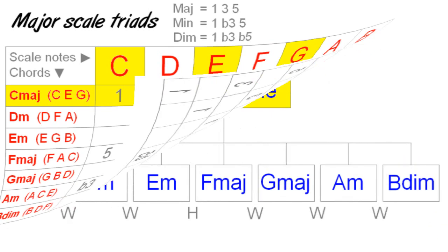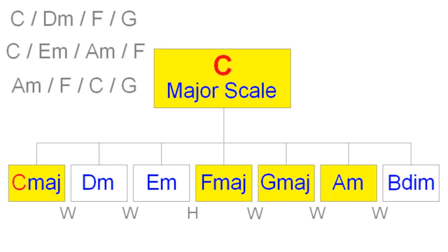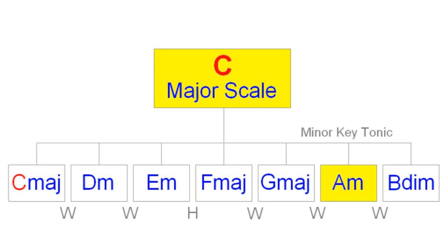We can then pull out different combinations of those chords to build chord progressions that harmonise with that root major scale. Even minor key progressions can be seen as relative to that root major scale, simply resolved to the sixth degree chord. In this example, A minor is the relative natural minor key of C major. Aside from being able to write chord progressions that flow naturally, training your ear to hear these chord relationships will help you identify when a single root scale can be used in a solo, for example.